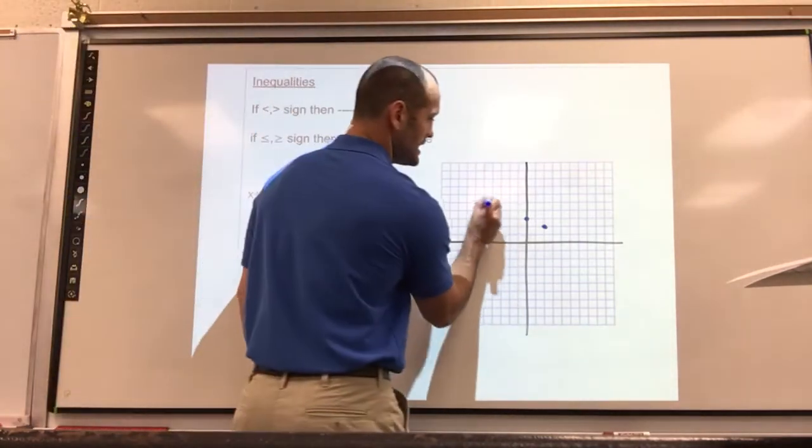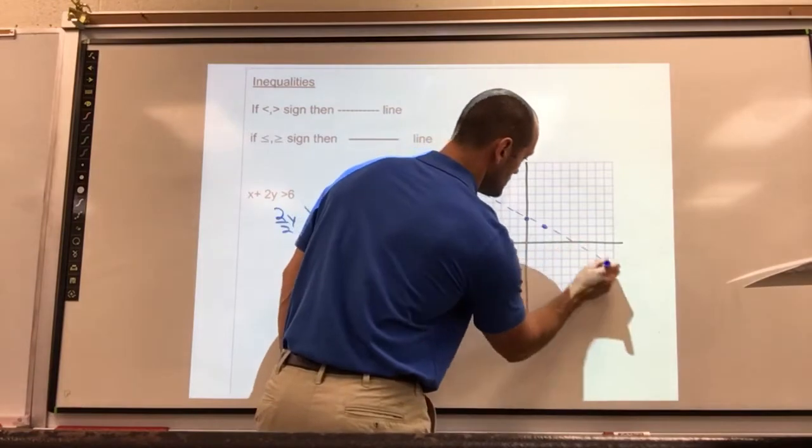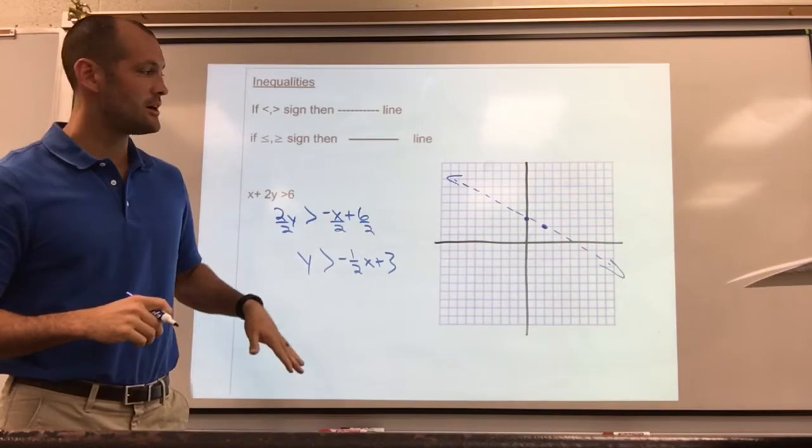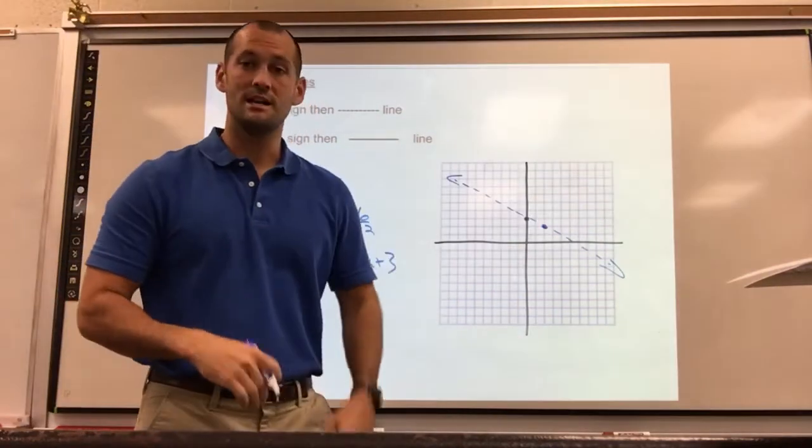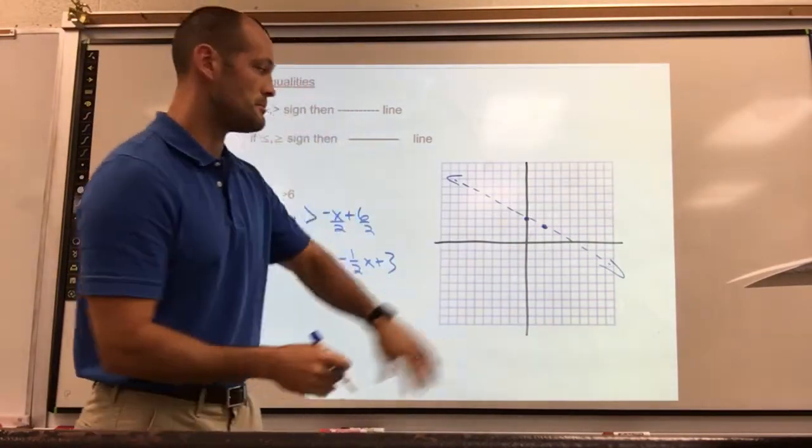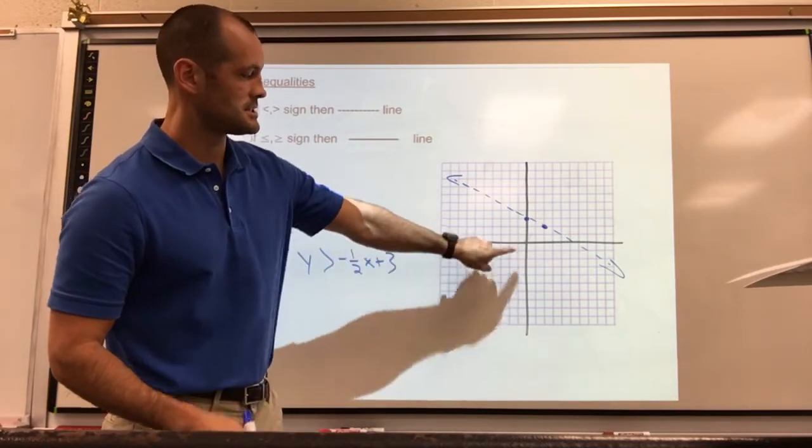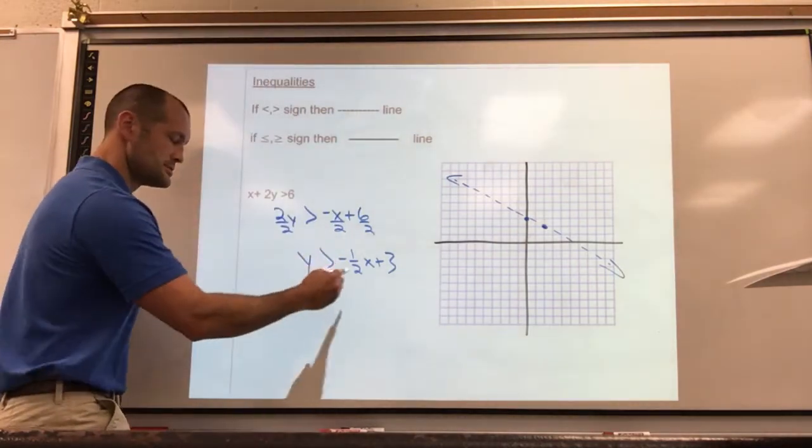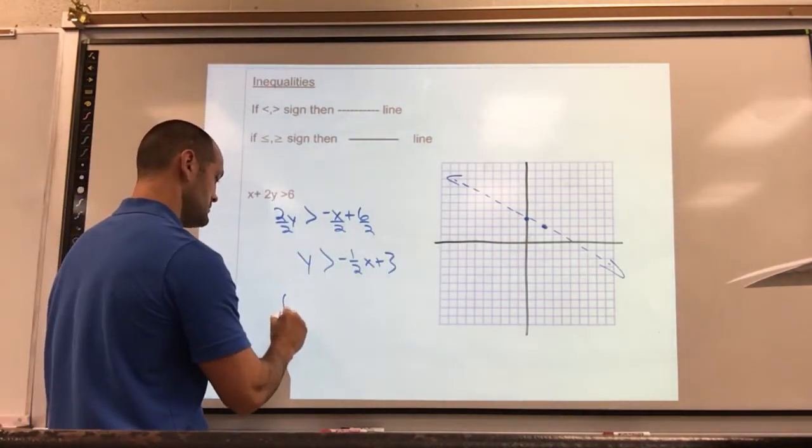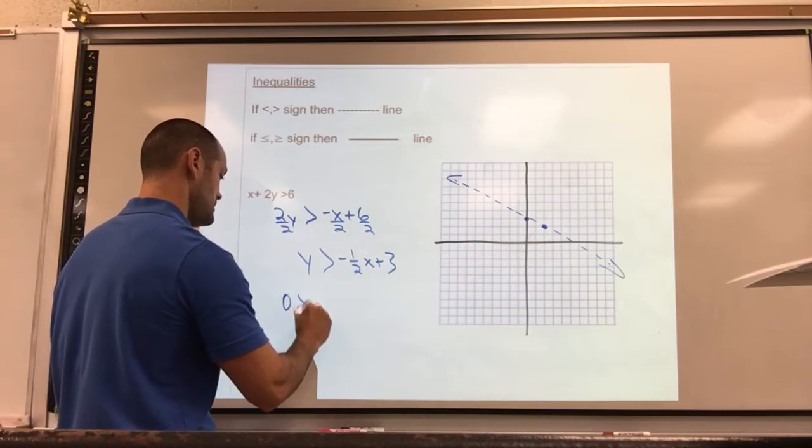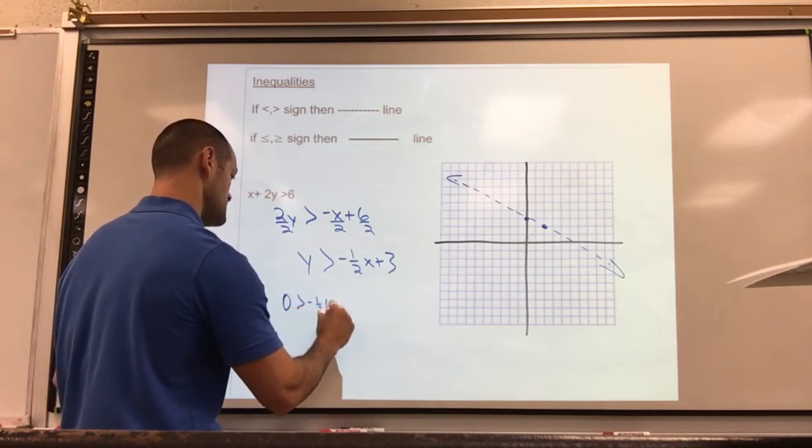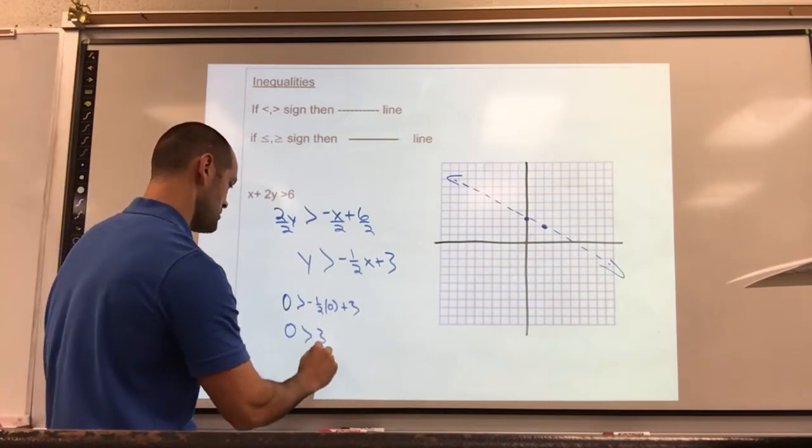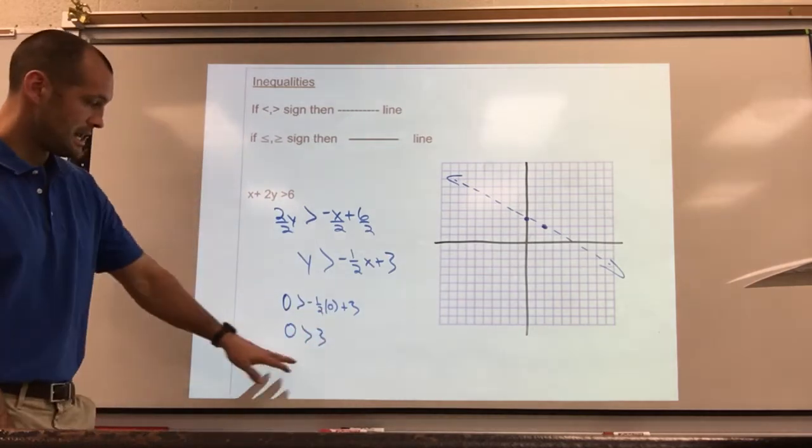Now this is where we need to remember the rules. We are not equal to, so it is going to be a dotted line. We're greater than, so we are above the line. Now if you're not good at remembering which is above, which is below, you can pick a point and test it. For instance, I could pick zero, zero. Notice that's below the line. If I were to plug zero, zero in, I would get zero is greater than negative one-half times zero plus three. This will leave me with a statement that zero is greater than three.